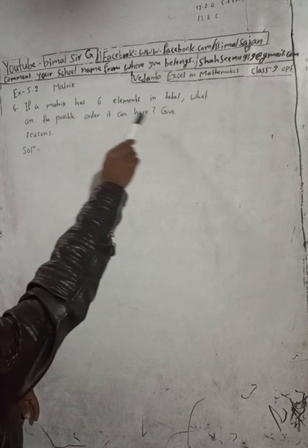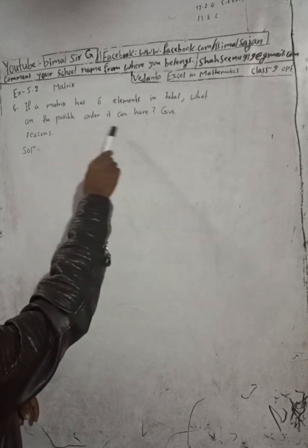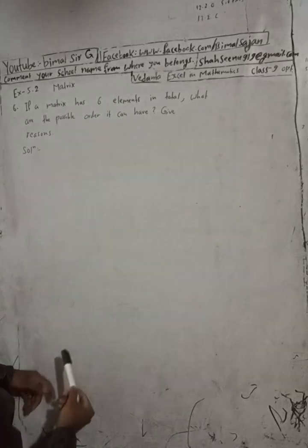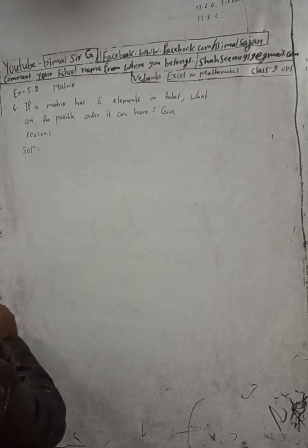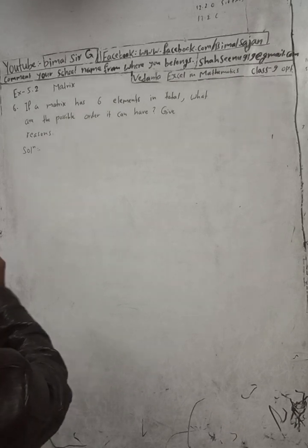If a matrix has 6 elements in total, what are the possible orders it can have? The total number of elements in the matrix is 6.